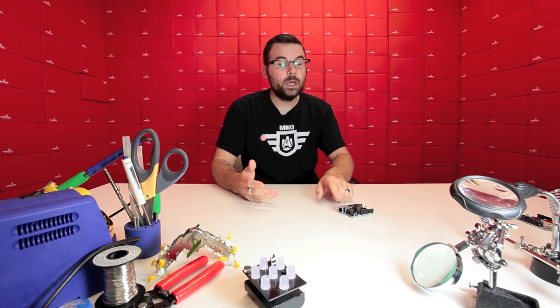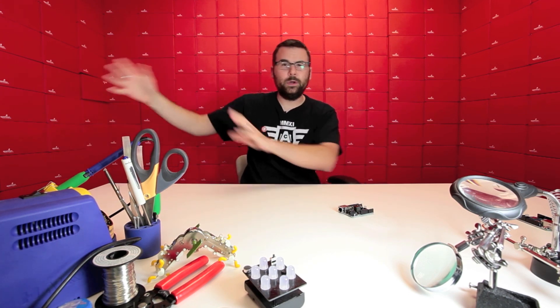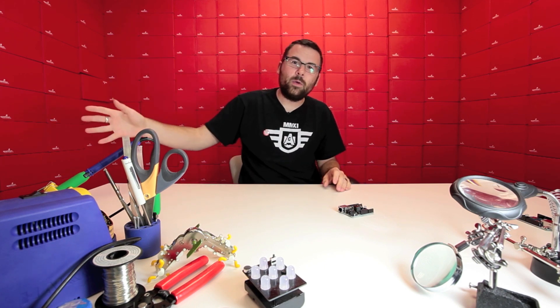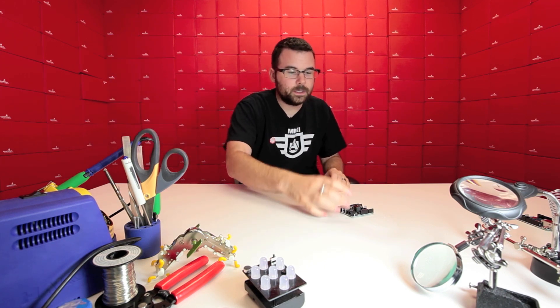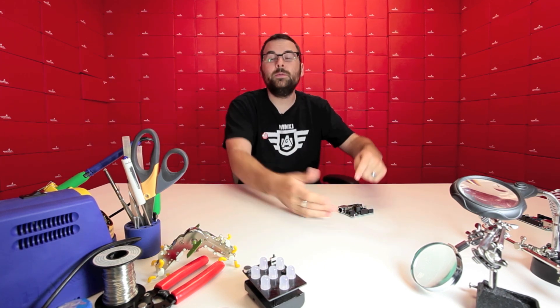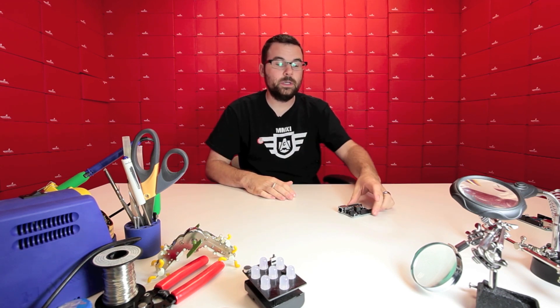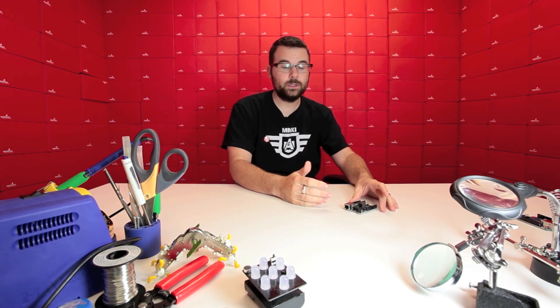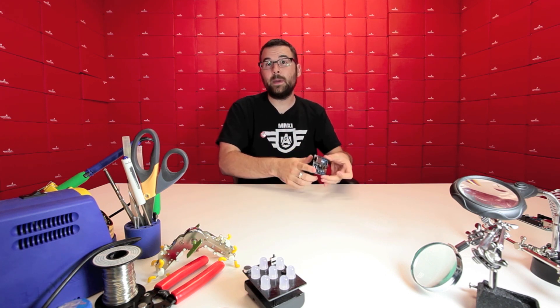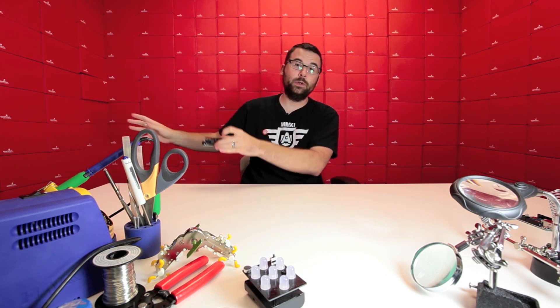So in this case, you would have power that you would be injecting somewhere over here on your network. And then it would come through the cable, come into this, go into this module, be regulated down into a usable voltage for the Arduino. And then that could power your board. So you wouldn't need to separately plug it into power. You could just draw power from your Ethernet connection.